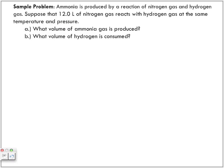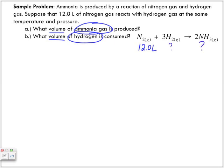Sample problem one: ammonia is produced by a reaction of nitrogen gas and hydrogen gas. Suppose that 12.0 liters of nitrogen gas reacts with hydrogen gas at the same temperature and pressure. Part A: what is the volume of ammonia gas produced? Part B: what volume of hydrogen is consumed? We start by writing and balancing the equation. We're given 12.0 liters of nitrogen gas and are trying to find the volume of ammonia gas and of hydrogen gas.